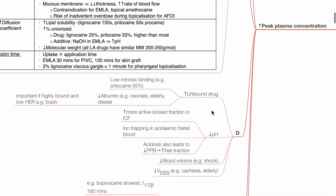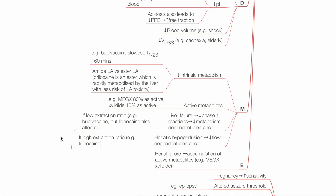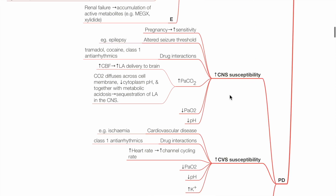Regarding distribution, increased unbound drug increases peak plasma concentration, such as in low intrinsic protein binding and in conditions with low plasma albumin. Acidosis leads to ion trapping in the intracellular compartment; in a more acidotic fetus compared to the mother, this leads to increased plasma concentration in the fetus. Acidosis also leads to reduced plasma protein binding, increasing the free fraction. Reduced volume of distribution increases peak plasma concentration, such as in shock and cachectic patients. Reduced intrinsic metabolism, presence of active metabolites, liver failure, and liver hypoperfusion lead to increased peak plasma concentration of LA. Renal failure leads to accumulation of active metabolites, increasing their peak plasma concentration and toxicity. CNS susceptibility is increased in pregnancy, altered seizure threshold such as in epilepsy, drug interactions such as with tramadol, cocaine and other class 1 antiarrhythmics, hypercapnia, hypoxia, and acidosis.